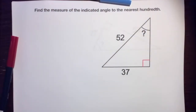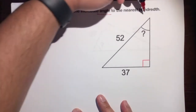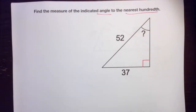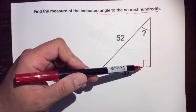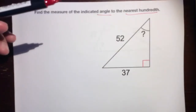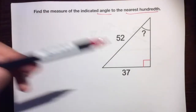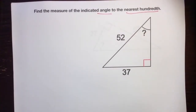Hello, this is Mr. Kenyanola and I'm going to help you find the measure of an indicated angle to the nearest hundredth. We have an angle in a triangle — a right triangle with a 90-degree angle. We're trying to find the missing angle, but we don't know the other non-right angle, so we can't use the triangle sum theorem. We have to get a little creative.